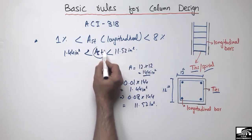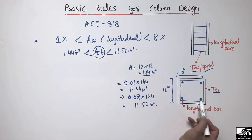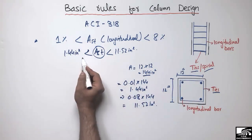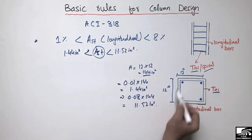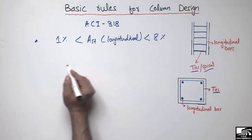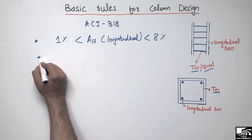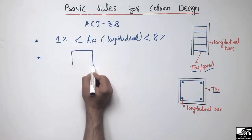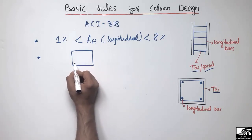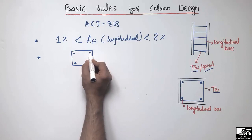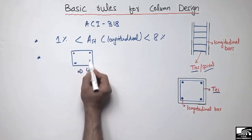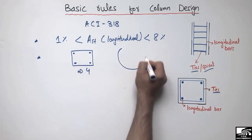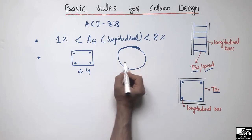So the area of the main bars should be between 1.44 square inches and 11.52 square inches for a 12×12 inch square cross-section column. The second important rule for the design of column is that in case of a rectangular or square column, the minimum number of steel bars should be four — one on each corner. In case of a circular column, the minimum number of bars should be six.